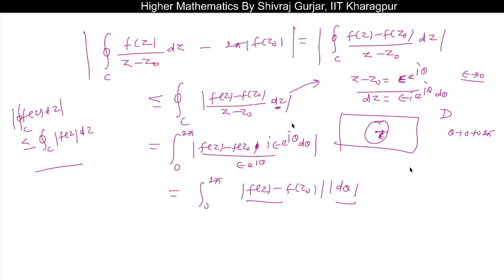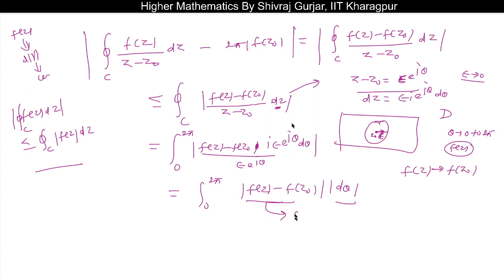The function f(z) is continuous at z₀ because an analytic function is differentiable, and differentiable implies continuous. So for small ε, f(z) approaches f(z₀), meaning |f(z) minus f(z₀)| will approach 0. By the definition of continuity: |f(z) minus f(z₀)| < ε whenever |z minus z₀| ≤ η, where η can be taken as ε since our circle has radius ε.